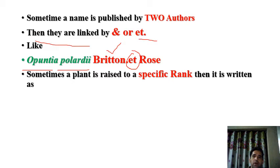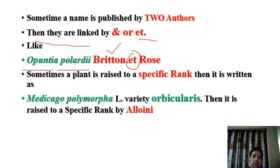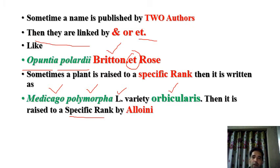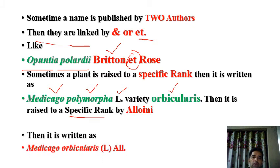Sometimes a plant is raised to a specific rank. For example, Medicago orbicularis — it was raised in rank by Allioni, and the name is then written as Medicago orbicularis (L.) Allioni, instead of Medicago polymorpha, because after its characters were studied it was moved to a higher rank group. The original author Linnaeus is written in brackets.